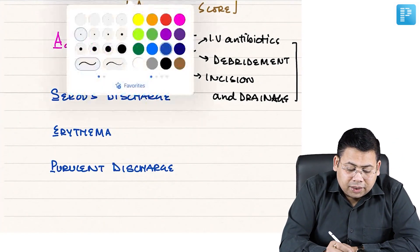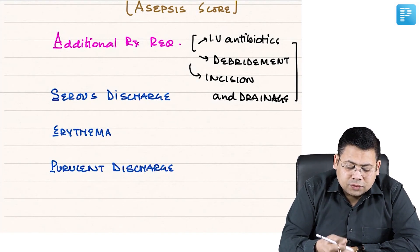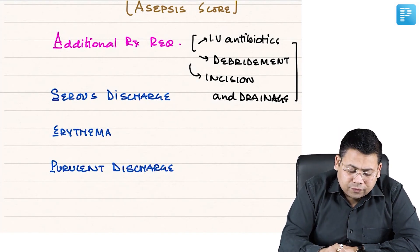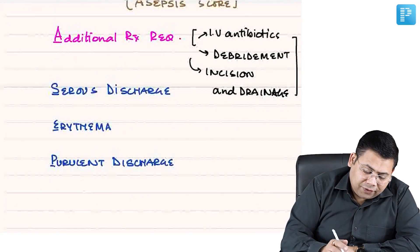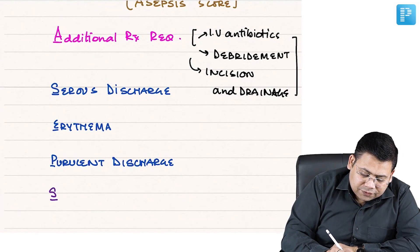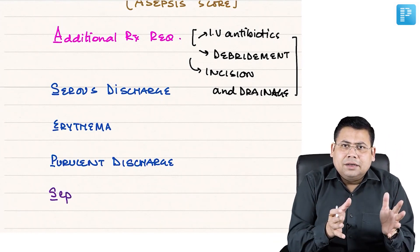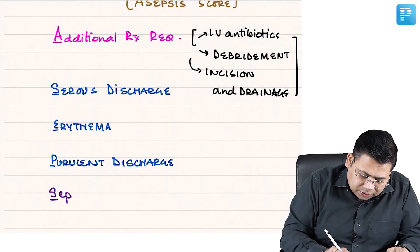If there is purulent discharge, the first point is additional treatment required. You grade from 1 to 10, remaining you grade from 0 to 5 or 1 to 5. Then we have S - Separation of skin. You must have heard of wound dehiscence. The wound gets dehisced off, so separation of wound edges.